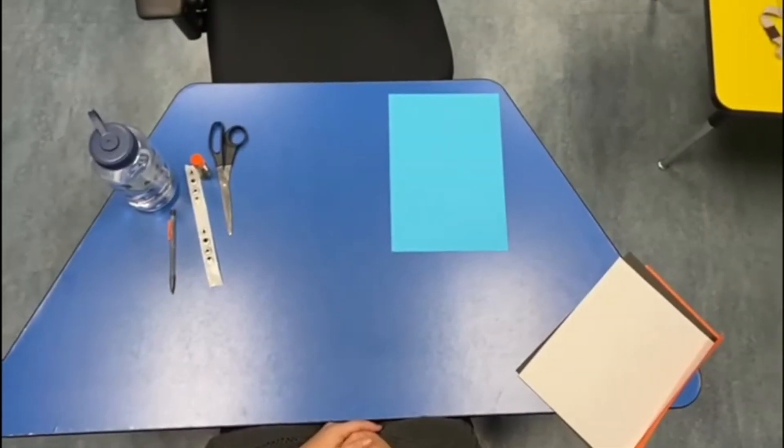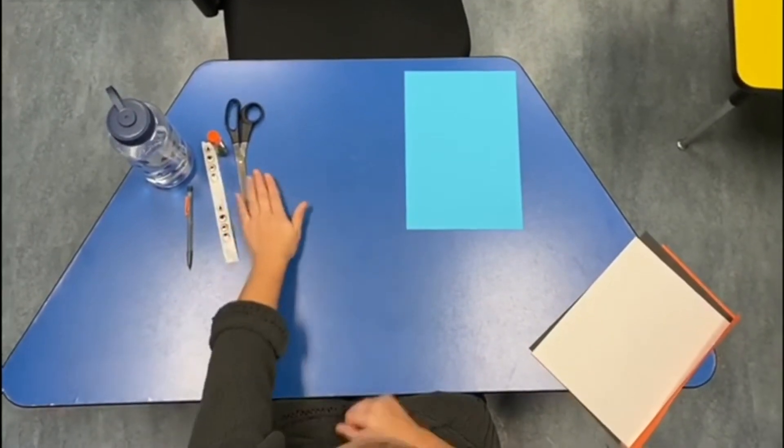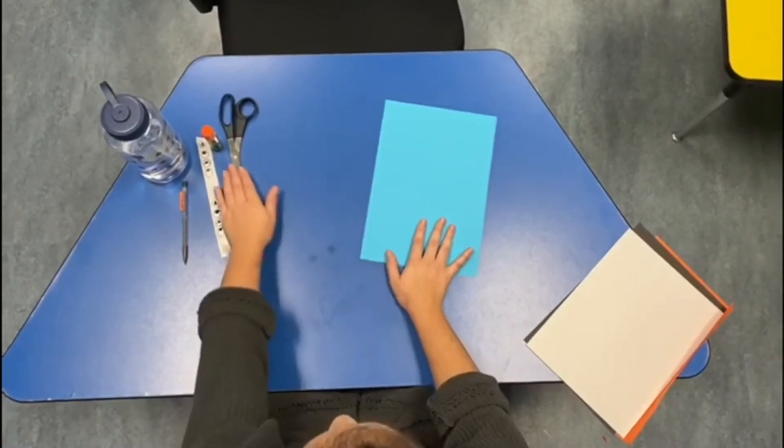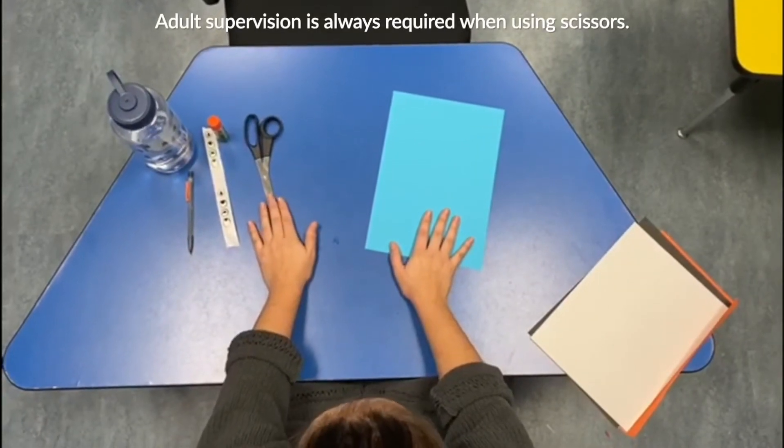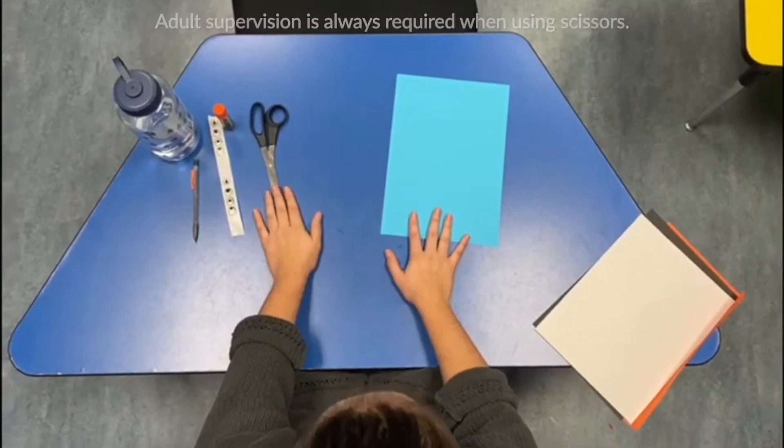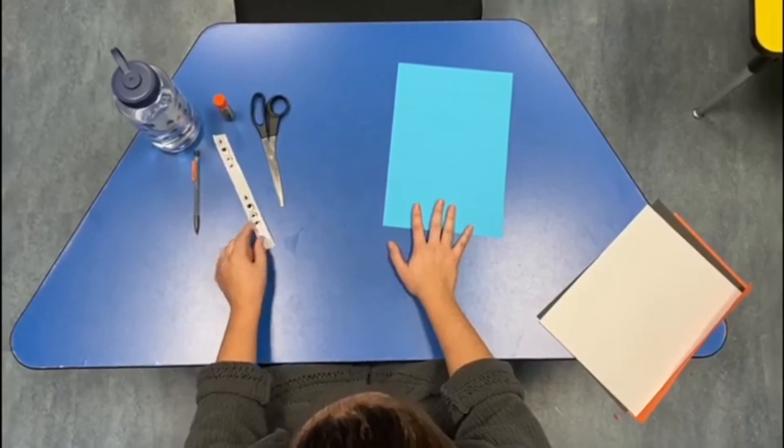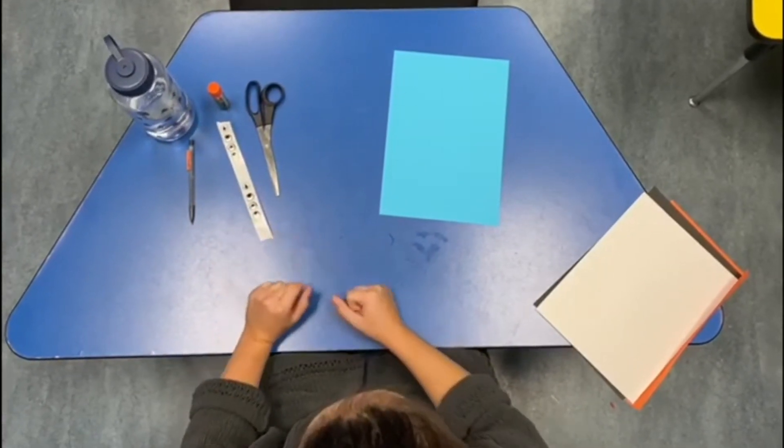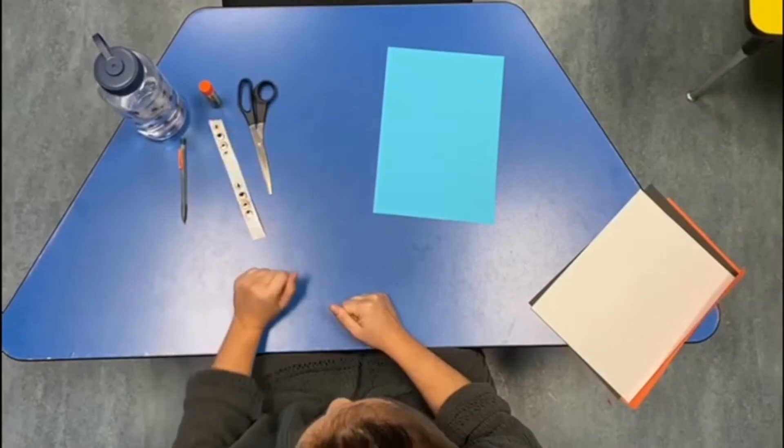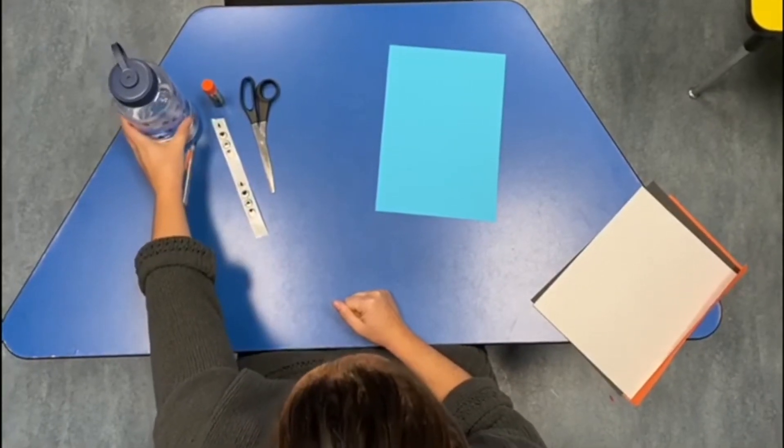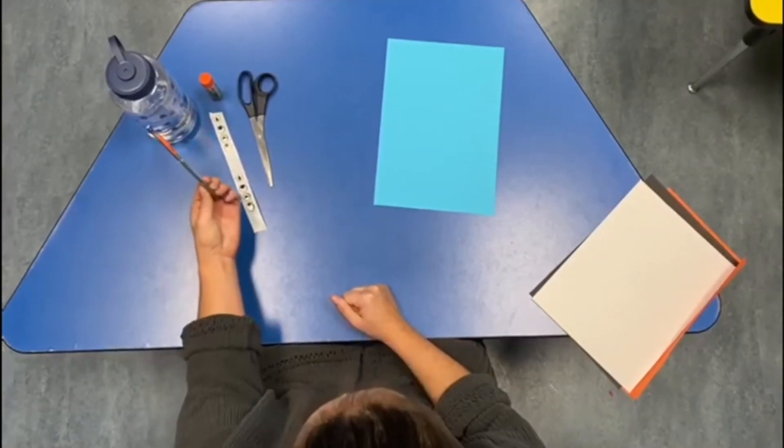Alright, so for today's craft we're going to make a penguin. All you need is some paper, some scissors, and make sure to ask mommy or daddy for help if you need it. Some eyes - I chose stickers but you could use googly eyes or you could even make them yourself. Some glue. I chose a water bottle to trace the body and a pencil.